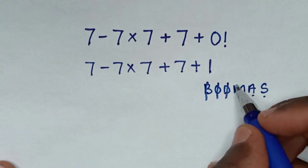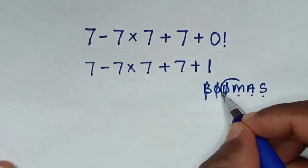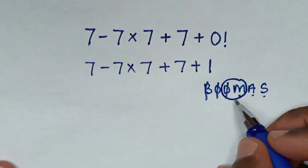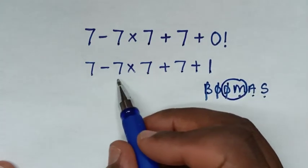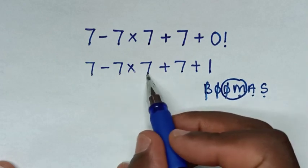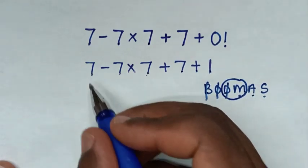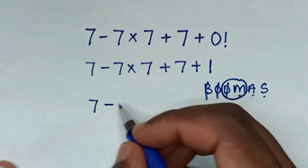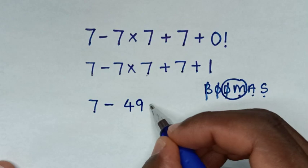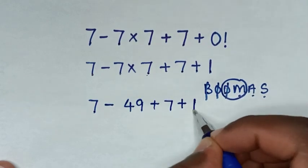Then in the first step we'll start to deal with division and multiplication. We don't have division so we'll deal with only this multiplication of 7 times 7 which is 49. So it will be 7 minus 49 plus 7 plus 1.